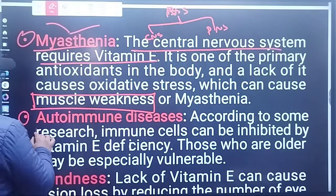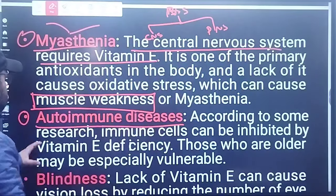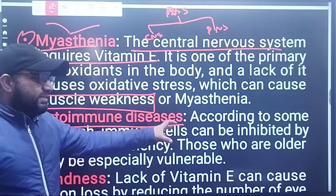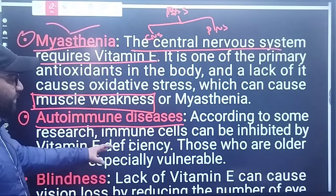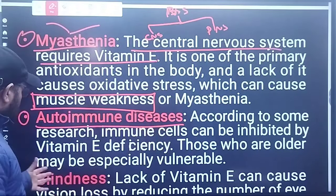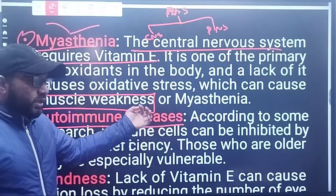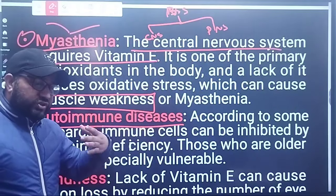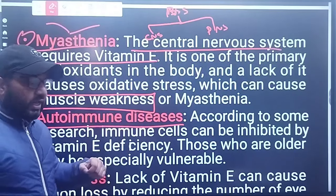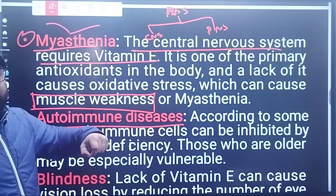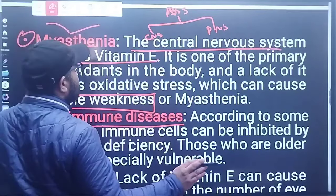Another condition is autoimmune diseases. According to some research, immune cells can be disrupted by Vitamin E deficiency. Those who are older may be especially vulnerable — if older people have Vitamin E deficiency, they are at higher risk of autoimmune diseases.